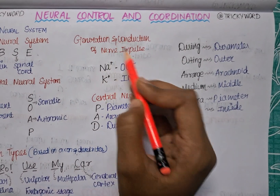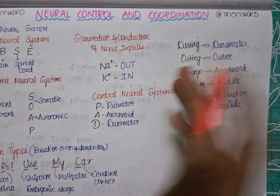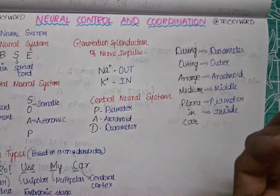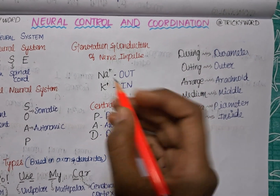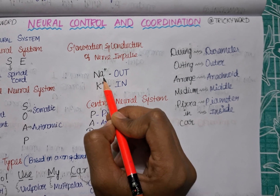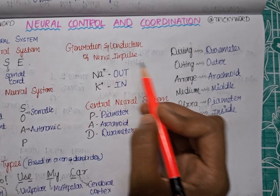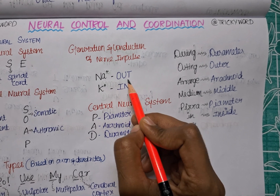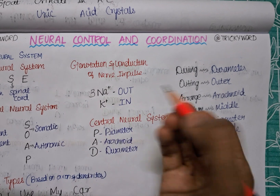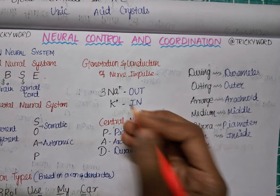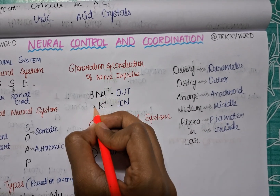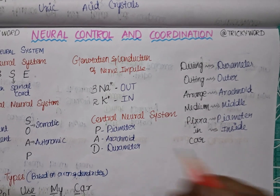Next is the trick for generation and conduction of nerve impulse — specifically for the sodium-potassium pump. The main confusion is how many sodium or potassium ions go in or out. The trick is based on counting digits: OUT has three letters — O, U, T — so three sodium ions go out. IN has two letters — I, N — so two potassium ions go in. Very simple!